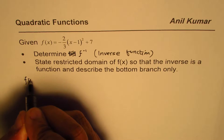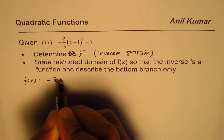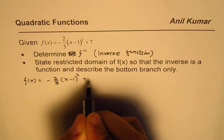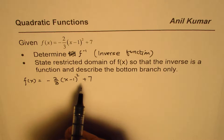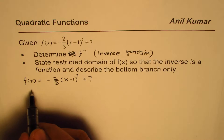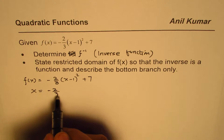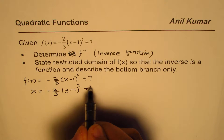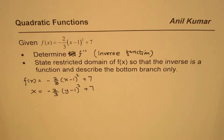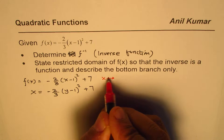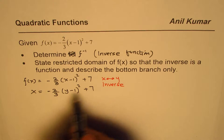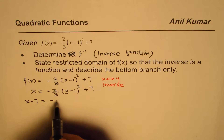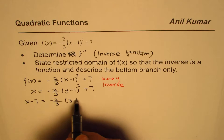We are given the function f(x) = -2/3(x-1)² + 7. This fraction can sometimes create a problem, which is why I've taken up this question from a previous test paper. To find the inverse of the function, we have to swap x and y. So we write x = -2/3(y-1)² + 7. At this stage we interchange x with y, and then we solve for y. Taking 7 to the left side: x - 7 = -2/3(y-1)².